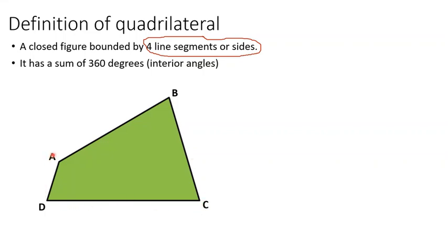And bounded by four line segments or sides. So we have here one side, two, three, and four. So therefore, we can consider it as a quadrilateral.